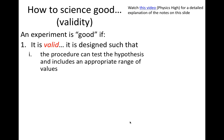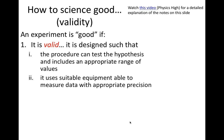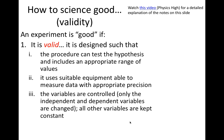I want to make it clear that experiments do not prove hypotheses. A failure to disprove a hypothesis generally increases our confidence that the hypothesis is correct, but more investigation is required for a hypothesis to be accepted as correct. Further marks of a valid experiment include using suitable equipment to measure the data with appropriate precision, controlling variables so we're only testing an independent and a dependent variable, keeping all other variables constant, and using appropriate measuring procedures.